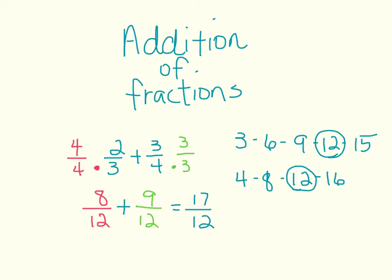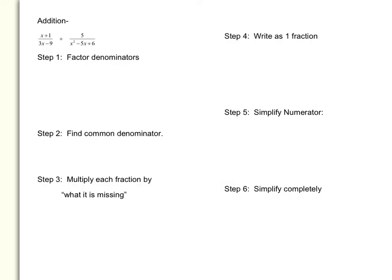The reason I wanted to review this is we are going to be using these same principles of finding a common denominator when we are adding rational expressions. We have to find a common denominator so that we can then add our numerators. We are going to look at the example x plus one divided by three x minus nine, plus five divided by x squared minus five x plus six. There are six steps, and we are just going to go through them one at a time. Step number one is to factor the denominators.